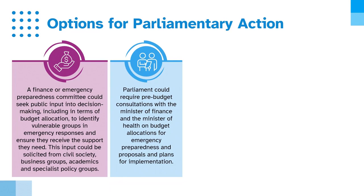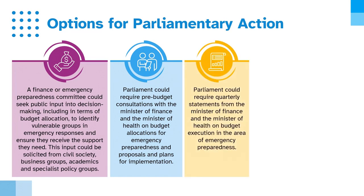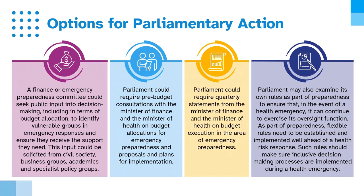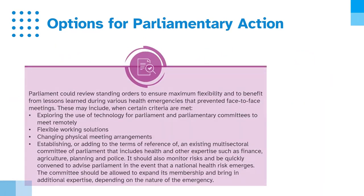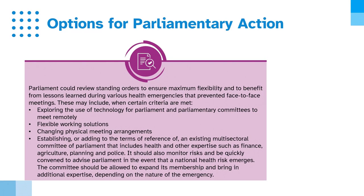Parliament could require pre-budget consultations with the Minister of Finance and the Minister of Health on budget allocations for emergency preparedness and proposals and plans for implementation. Parliament could also require quarterly statements from those ministers on budget execution in the area of emergency preparedness. Parliament may examine its own rules as part of preparedness to ensure it can continue to exercise its oversight function during a health emergency. Flexible rules need to be established and implemented well ahead of a health risk response, ensuring inclusive decision-making processes during a health emergency. This may include exploring the use of technology for Parliament and parliamentary committees to meet remotely when certain criteria are met.